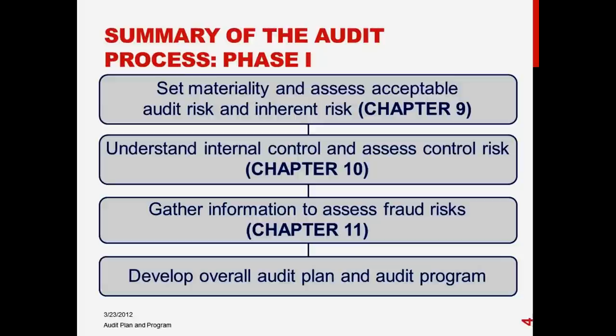The auditor's acceptable audit risk is the risk that the auditor is willing to take that the financial statements are incorrect even though they issued a clean, unqualified opinion. The auditor is not willing to take a lot of risk because of the consequences. The auditor controls acceptable audit risk by gathering information and evidence — through the evidence collection process. If control risk and inherent risk are high, the auditor will want a lot more evidence to keep audit risk low.